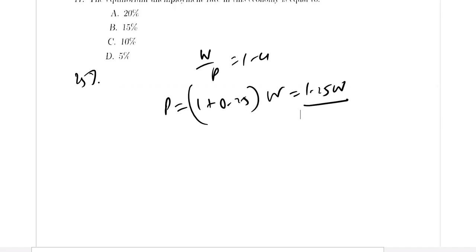Substituting P equals 1.25W into the equilibrium condition, we get W divided by 1.25W equals 1 minus U. So 0.8 equals 1 minus U, therefore U equals 0.2 or 20%.